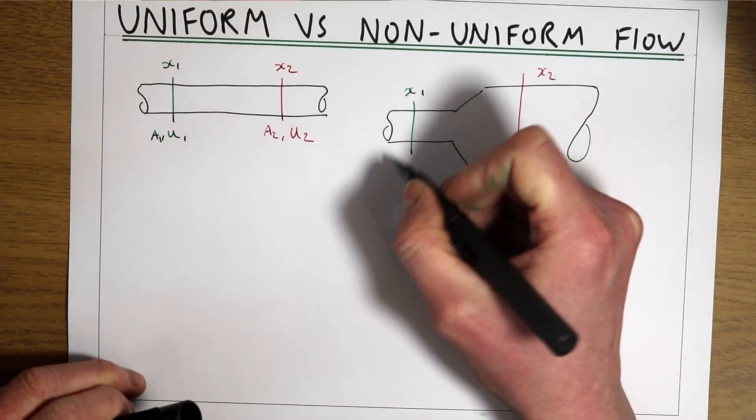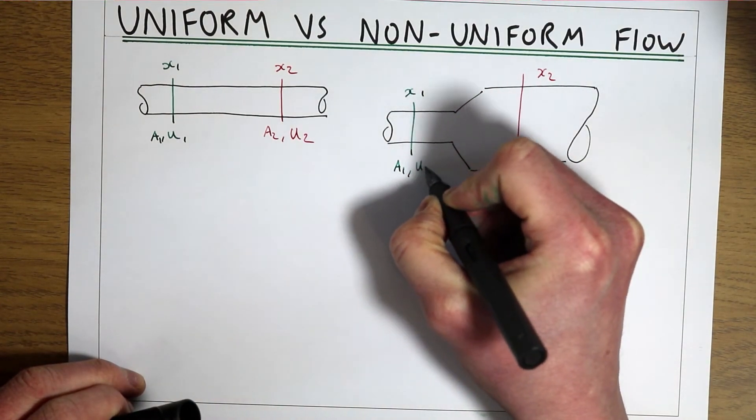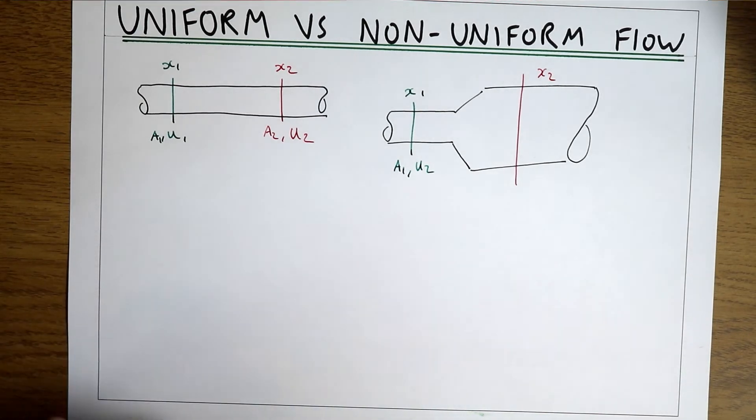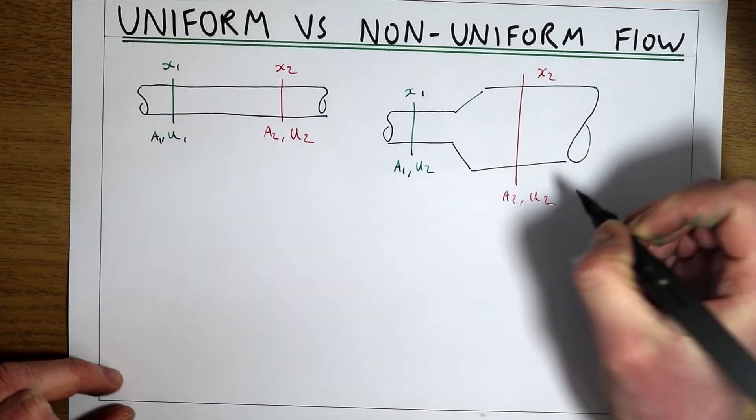So in this example we've got a small area at x1 which will give us a larger velocity. By the time we've got to x2 the area is now bigger which means we're going to have a smaller mean velocity.